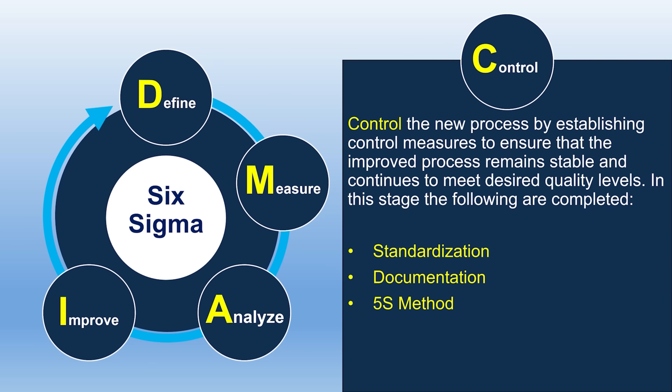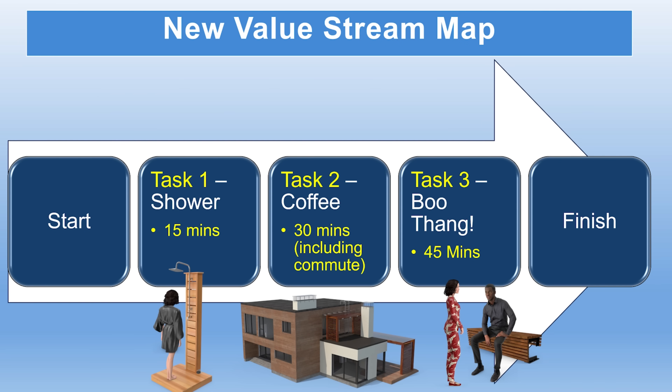The Control stage is where we maintain and standardize everything we've changed so that we have a clear picture of what things look like moving forward. You say it worked — let me document this process. I'm now going to take a 15-minute shower, make my coffee at home, get to work 30 minutes early, and finally possibly get that promotion that has been delayed because I couldn't get to work on time.